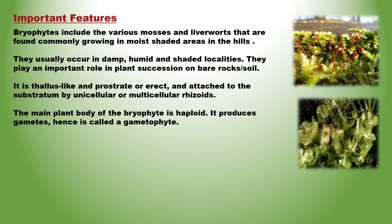The main plant body of the bryophyte is haploid. It produces gametes and is called a gametophyte. The green structure that we see is the gametophyte. It is the dominant phase of the life cycle. The sporophyte is attached and dependent on the gametophyte. Sporophyte produces spores. Water is extremely important for fertilization.